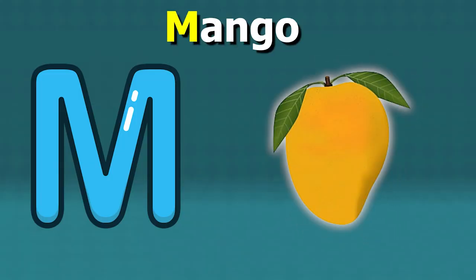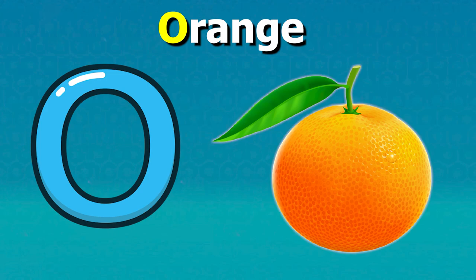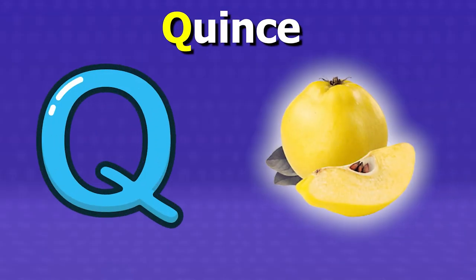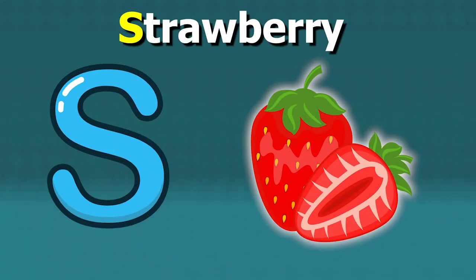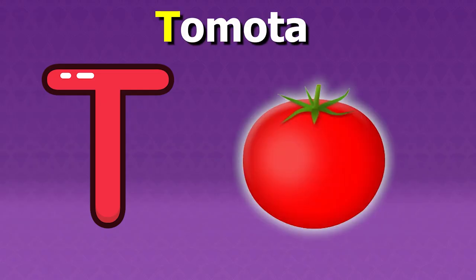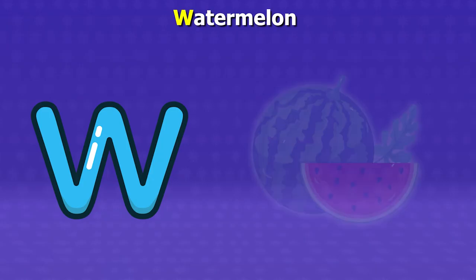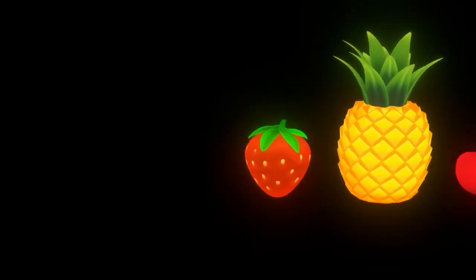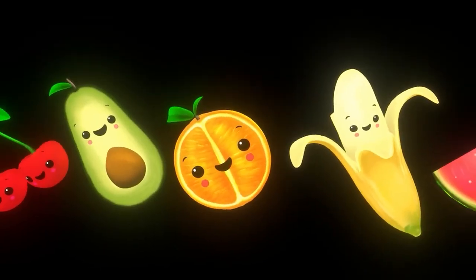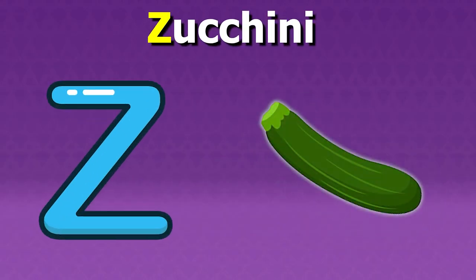M for mangoes, N for nashi, O for oranges, P for pears, Q for quinces, R for raspberries, S for strawberries, T for tomato, U for ugly fruit, V for vanilla, W for watermelon, X for ximenia, Y for yumberry, Z for zucchini.